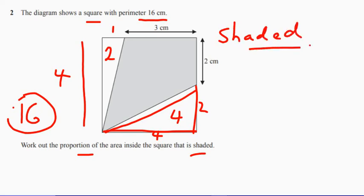So the shaded part will be 16, take away the non-shaded, which we've just worked out, four plus two, which is six. So the shaded part must equal 10.